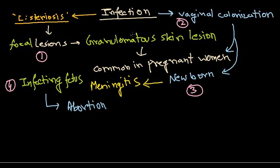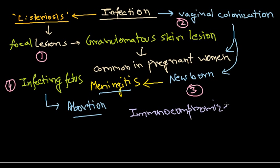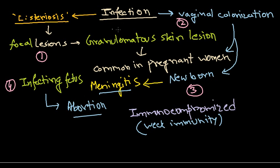In normal individuals, it won't lead to such dangerous effects, but in pregnant women and newborns, it can cause meningitis, abortion, and other serious complications. The second major at-risk group is immunocompromised individuals. Because they have very weak immunity, they can catch this disease fairly easily. So the two major concerns are pregnant women and immunocompromised people.